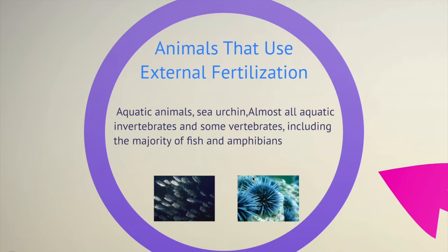Animals that use external fertilization are mostly aquatic, because they need water. Examples include sea urchins, almost all aquatic invertebrates, and some vertebrates including the majority of fishes and amphibians — such as the frog, which uses external fertilization. So this is all about external and internal fertilization. If you need to understand anything in more detail, please comment and let us know, and keep visiting Tiger Schooling.